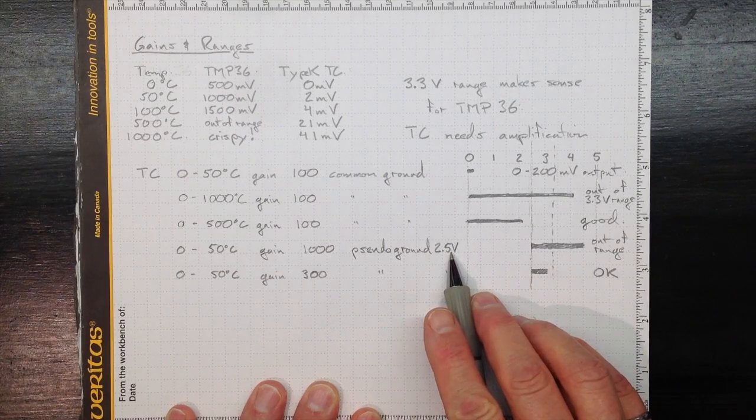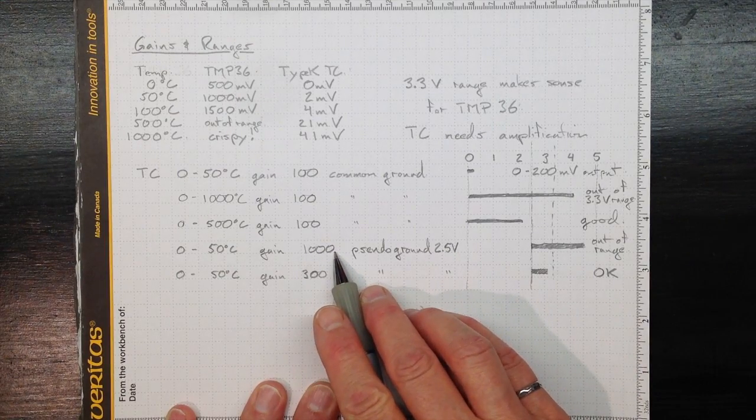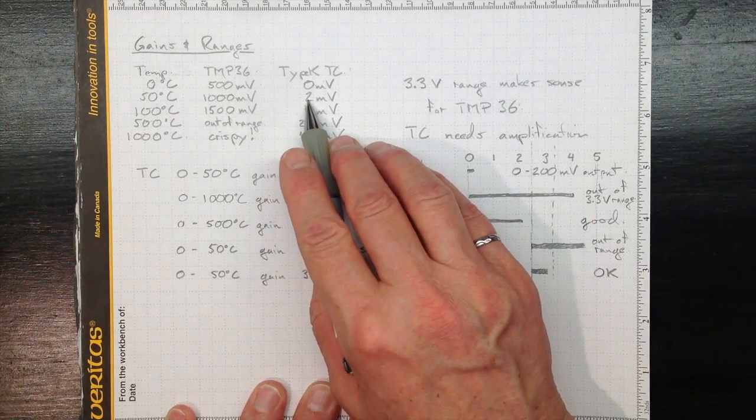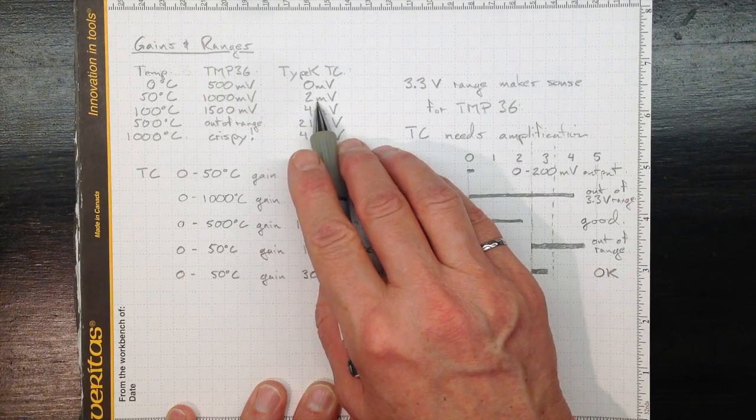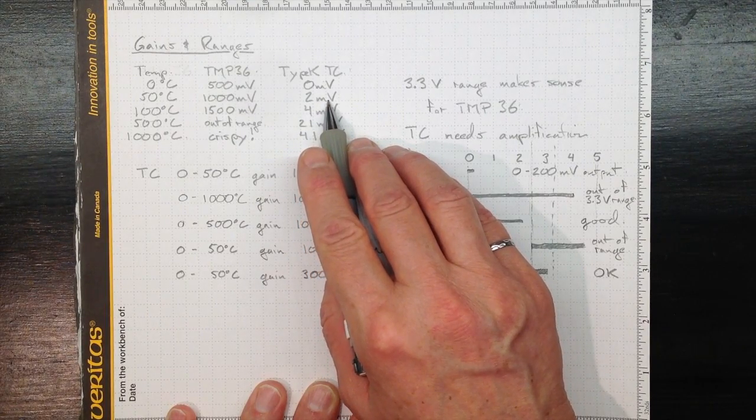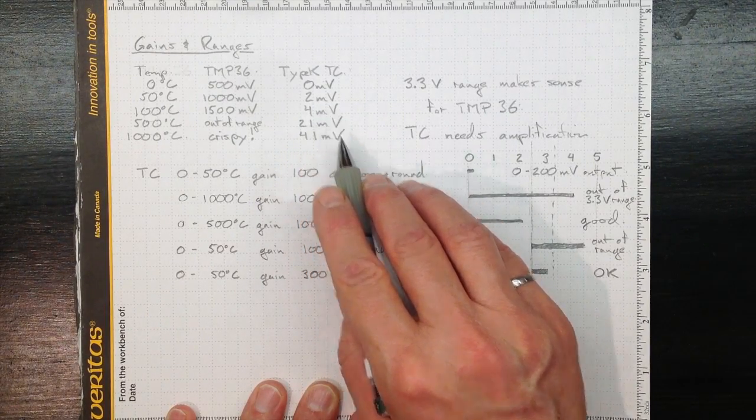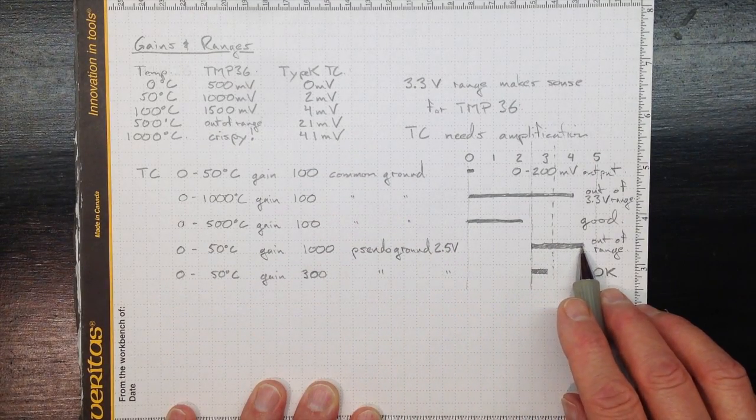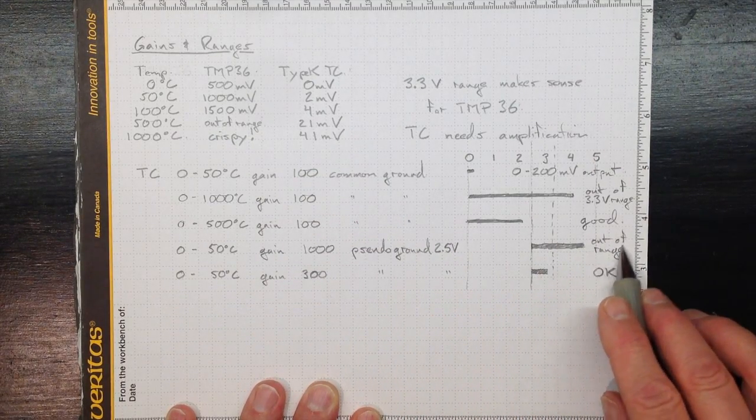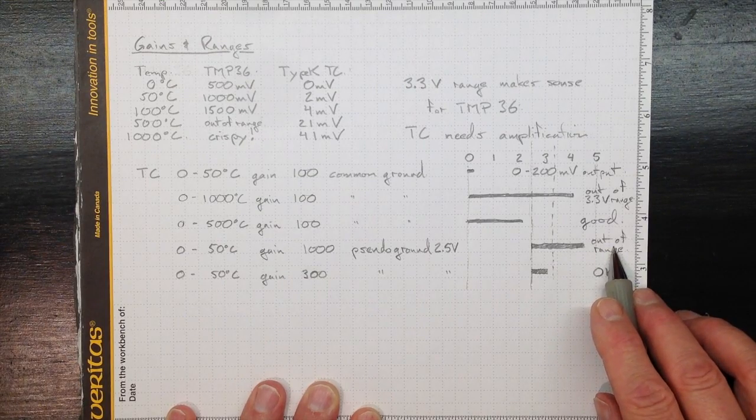If we use that 2.5 pseudo ground and a gain of a thousand, then we'd have two millivolts times a thousand is two volts, two thousand millivolts, plus our pseudo ground of 2.5, we'd be up here. And again, we're out of range, so that wouldn't work for us.